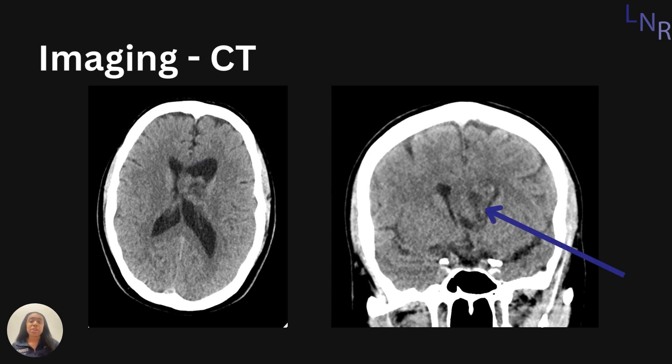In the coronal view, we see the mass inside the patient's left ventricle again. It sits along the septum pellicidum, and you can also see the apparent cystic areas within the tumor.